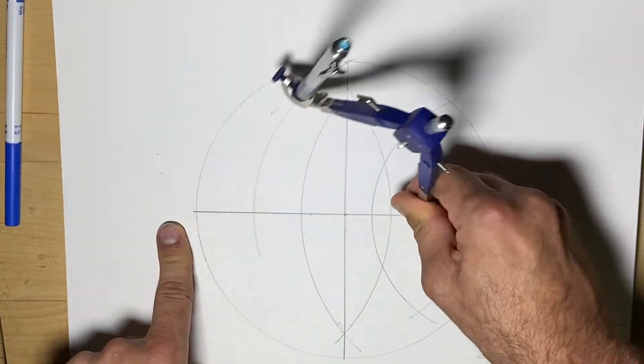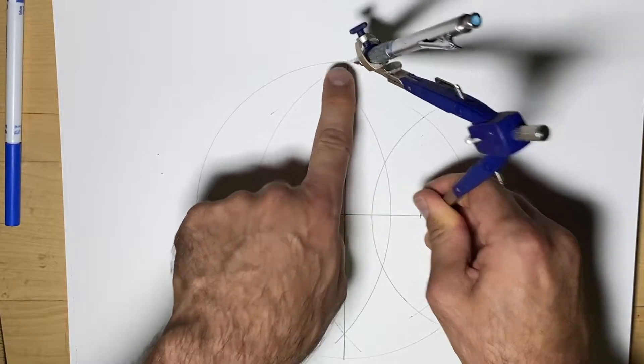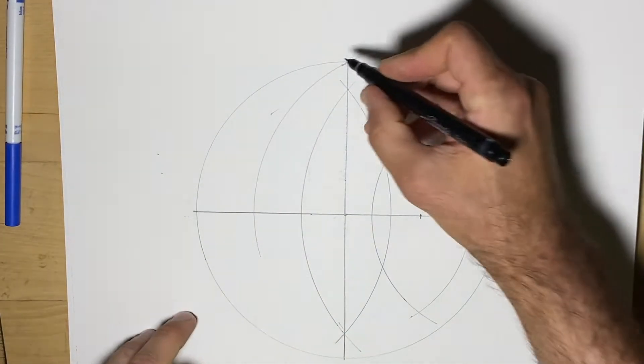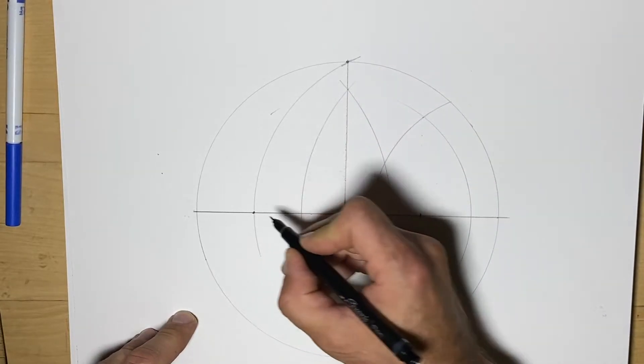We're going to draw this arc from there to there. I'll use a pen for this spot. We're going to connect here to this new spot we found.